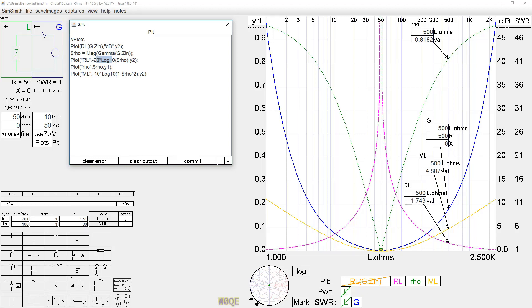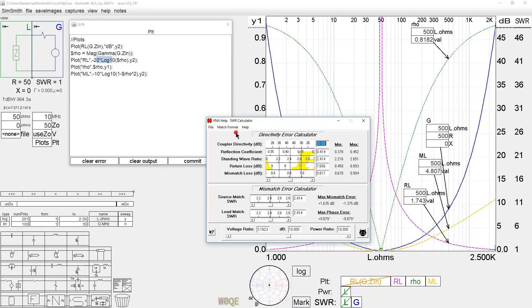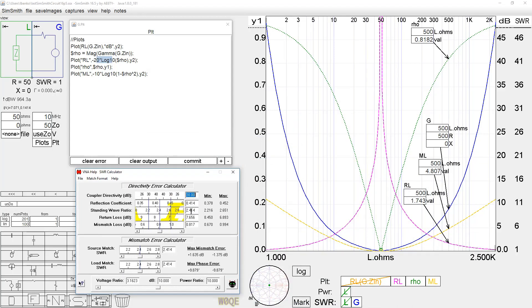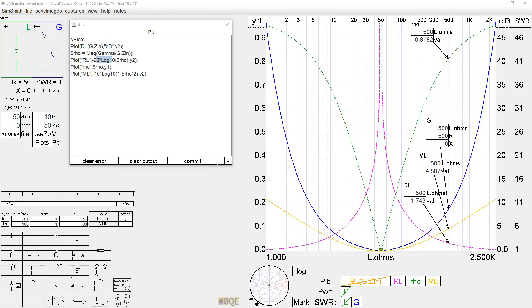Now, we can take, very quickly, a program such as this little SWR calculator. And we can put a standing wave ratio of 10 to 1 in here. It says that a 10 to 1 SWR, it's a reflection coefficient of 0.818. There it is, 0.818. It says return loss is 1.743, 1.743 dB. And it says the mismatch loss is 4.807. And there we are, 4.807 dB. So SimSmith calculates exactly what you'd expect it to calculate.